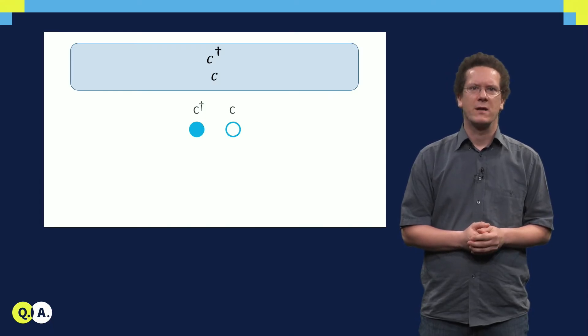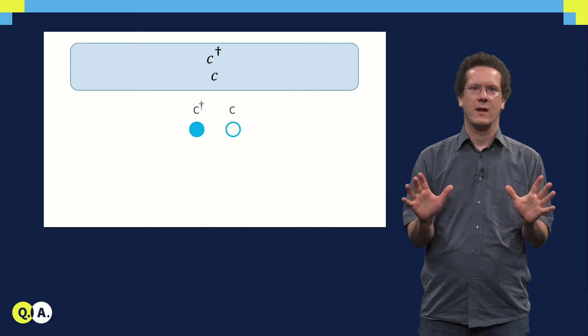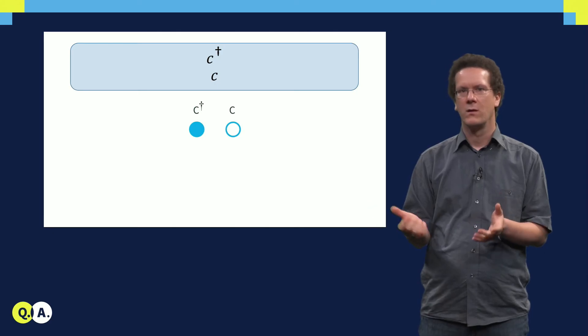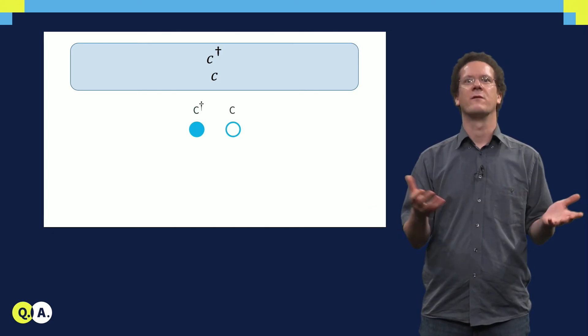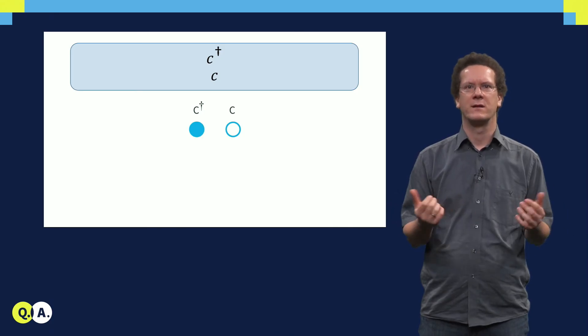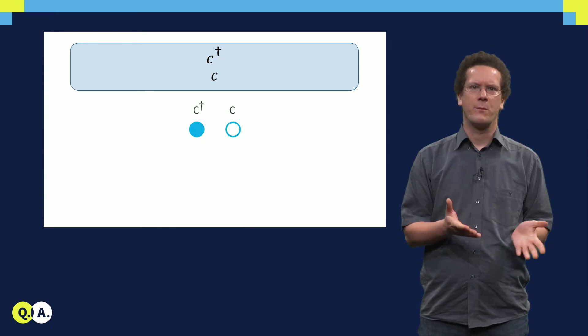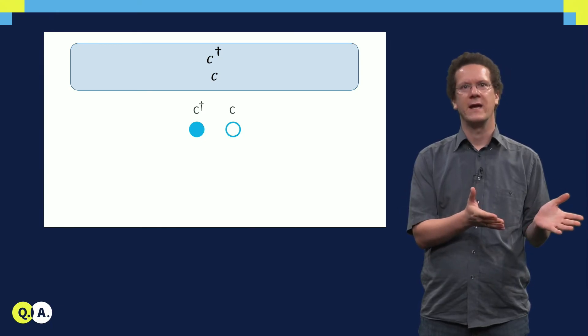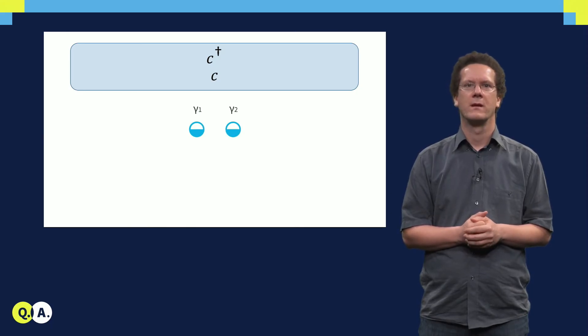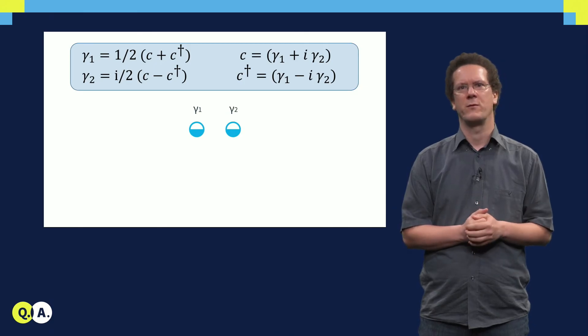To introduce Majorana bound states, we can first do a simple mathematical trick. In condensed matter physics, a state can be filled, this is an electron, or it can be empty, in which case we have a hole. These are the equivalent of particle and antiparticle, respectively. They are described by fermionic operators, the creation operator c† for the electron, and the annihilation operator c for the hole.